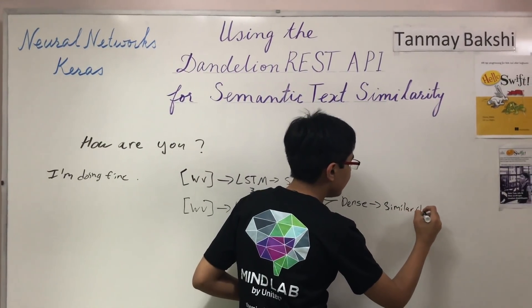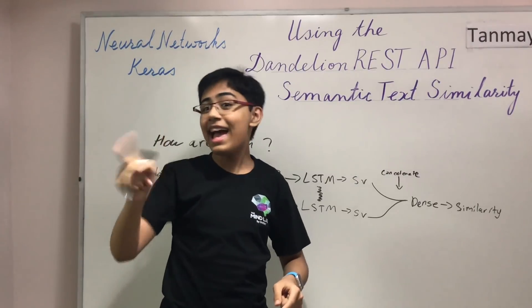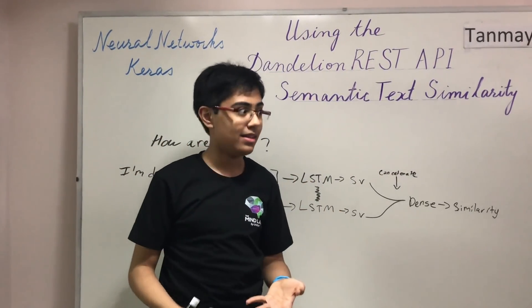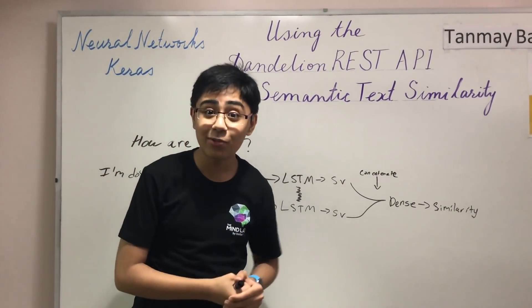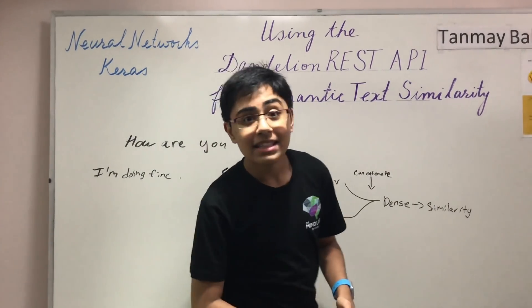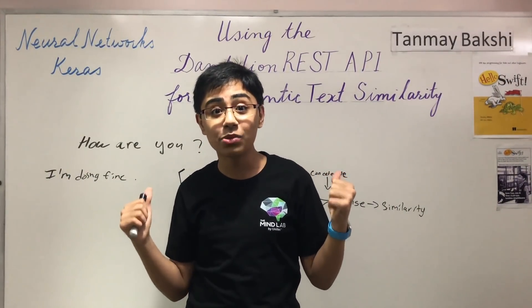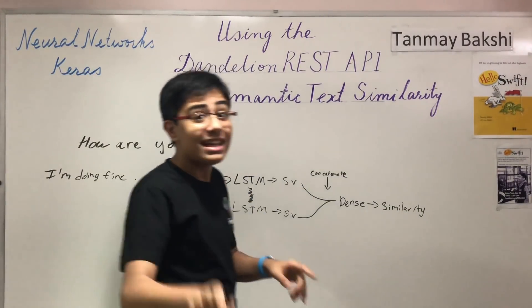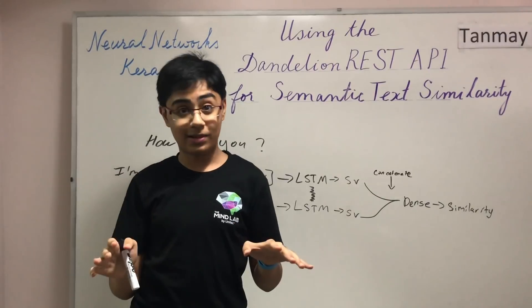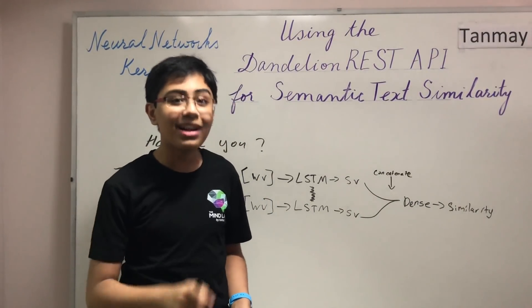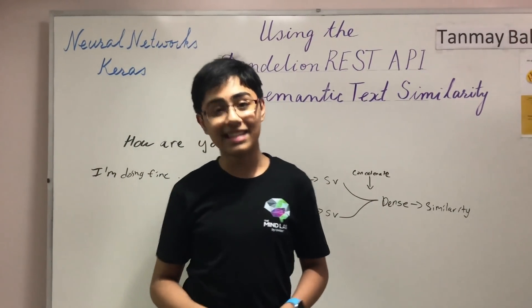How do you find the similarity? You find pairs of similar and non-similar sentences to train on. Where do you get that data? Sites like Quora and StackExchange, where people ask the same questions repeatedly. Quora actually made their duplicate questions dataset available to the public. Using that dataset, people have trained neural networks like this and achieved great accuracy. But instead of going through all that pain, it's much simpler — just use the Dandelion API. Let's get to the coding part and build an application using the Dandelion API for text similarity.